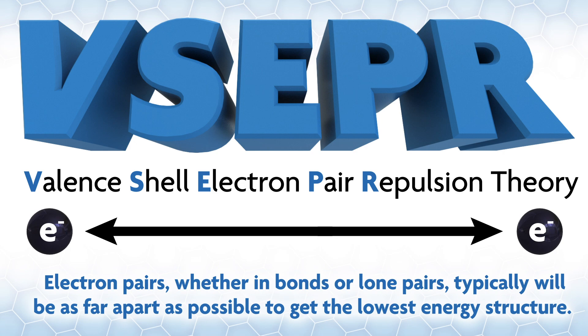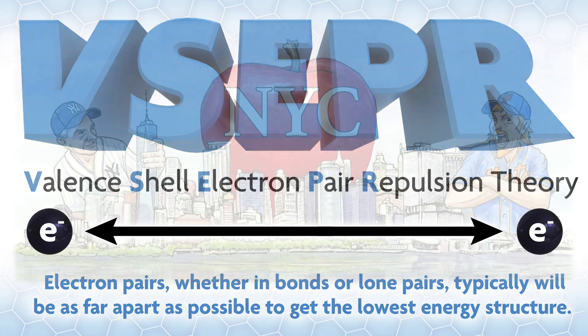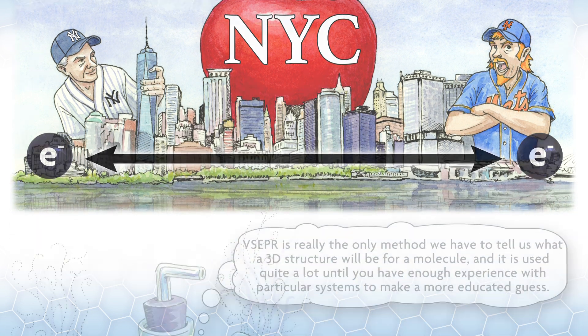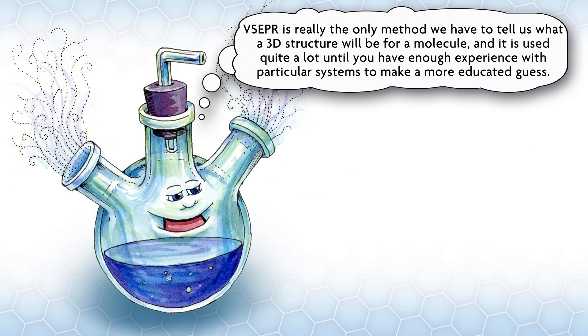There are some nuances to the method, but in general placing all the different things around a central atom as far apart as possible will get you in the right ballpark. It's a little like New York Yankees and Mets fans - electrons live in the same place but try to avoid each other.